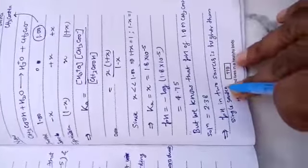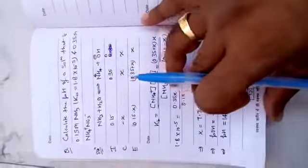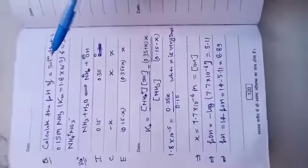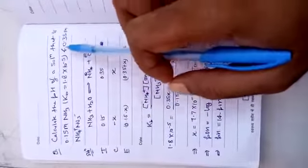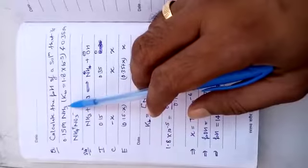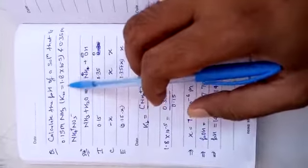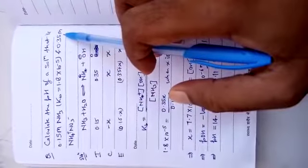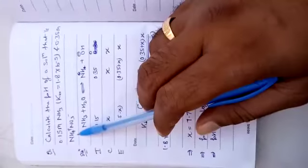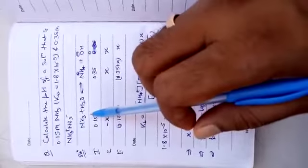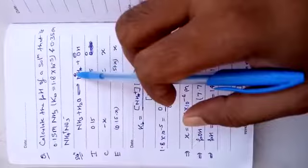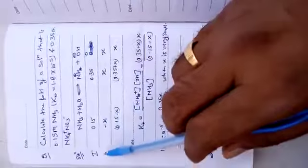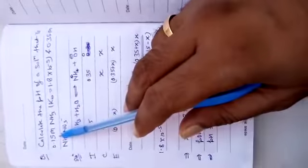Now take another example of basic solution. Calculate the pH of a solution that is 0.15 molar ammonia, where dissociation constant Kb is given, and 0.35 molar of ammonium nitrate. Now what will happen? When ammonia dissolves in water, it will give NH4+ and OH-. Initially, NH3 is 0.15 molar.